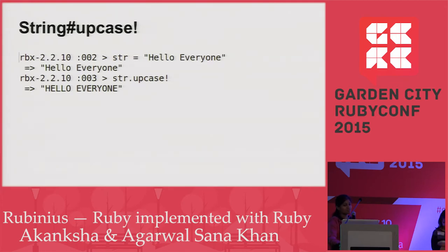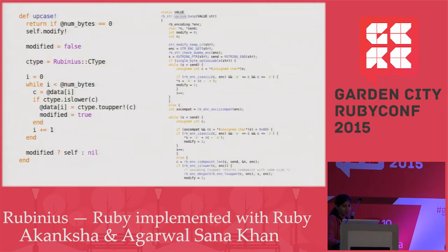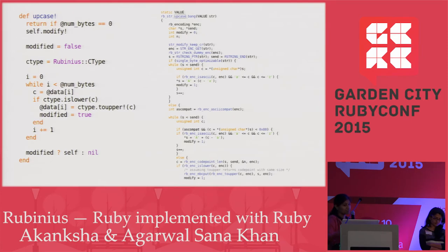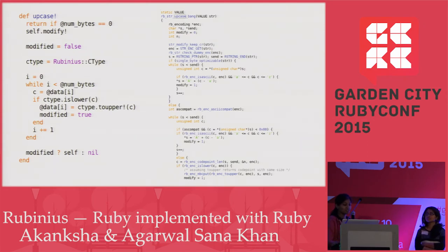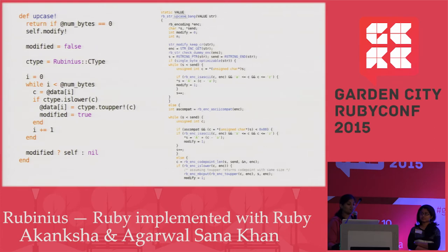This is the string upcase function which converts the string to uppercase. On the left-hand side you can see the upcase method code, written entirely in Ruby and quite easy to understand. If the string is empty, it just returns. If the string contains some characters, it iterates through those characters, converts them to uppercase, and returns the modified string. If the string is already in uppercase, it returns the unmodified string.